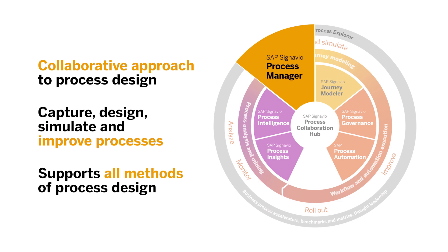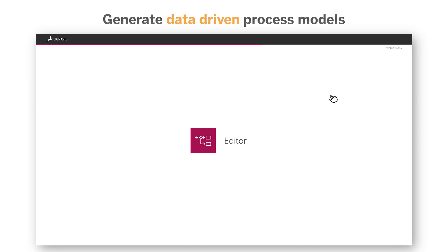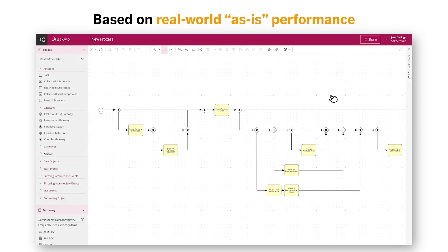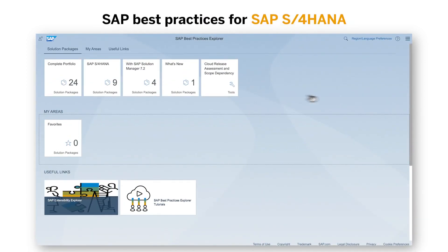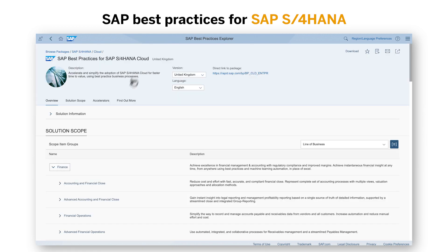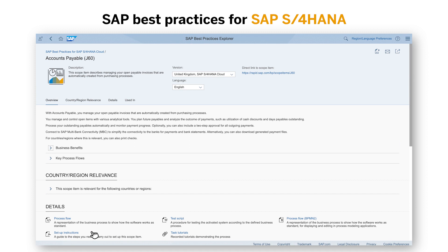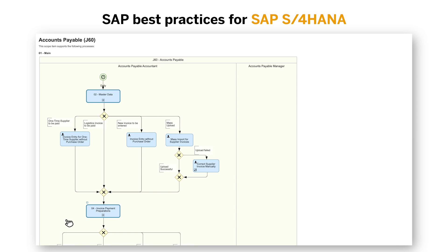It allows you to approach the design of your operational processes in different ways depending on your needs, desired outcomes, and maturity. You can leverage process models generated from process mining investigations in SAP SIGNAVIO Process Intelligence. These data-driven models are based on your real-world performance and give you the perfect basis to kick-start your change efforts. Alternatively, when undergoing an SAP S/4HANA transformation, many organizations look to define their business processes using SAP best practices. These best practices offer a range of process models based on SAP's extensive experience in helping customers manage, improve, and execute business processes.